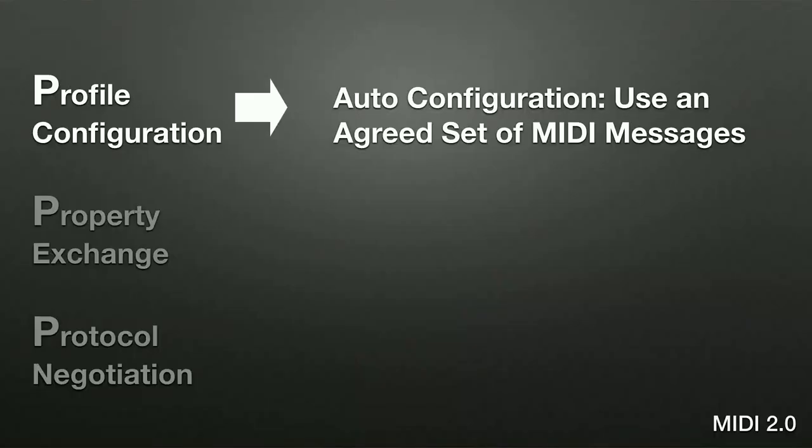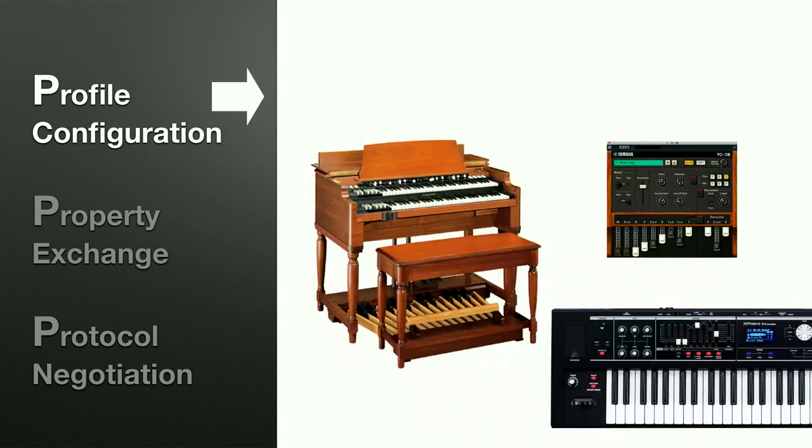We start with profiles — auto-configuration where two devices agree to use a predetermined set of messages. Consider a drawbar organ: a Hammond has nine drawbars, and three different drawbar organs may each use different messages to control them. With a profile, a device can say to another 'what profiles do you understand?' and the other end replies 'I understand the organ profile.' Both then switch to using that profile, so drawbar number 16 uses a common message across all manufacturers.